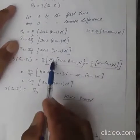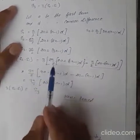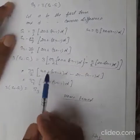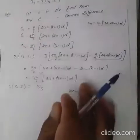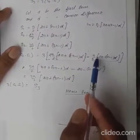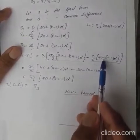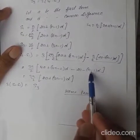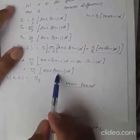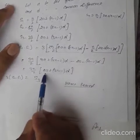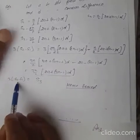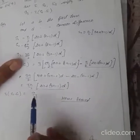Taking n by 2 as common, after multiplication we get 4a plus 4n minus 2 into d, minus 2a and distributing the minus sign gives n minus 1 into d. After simplification you will find 2a plus 3n minus 1 into d, which is S3. Therefore 3 into S2 minus S1 is equal to S3.